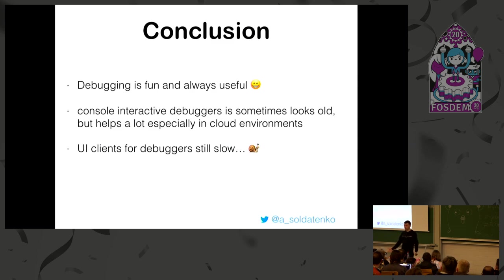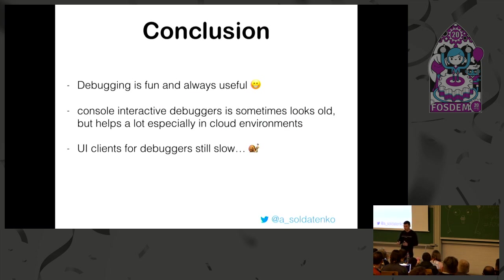Debugging is fun and always useful. Why do I use a console debugger rather than a UI? Because sometimes it's faster. When you run a UI debugger like GoLand, it pre-renders all variables, which is sometimes slow. If you debug some program with a visual debugger that has a huge struct with lots of attributes, it can be slower. The console debugger is much faster because you just show what you really need.